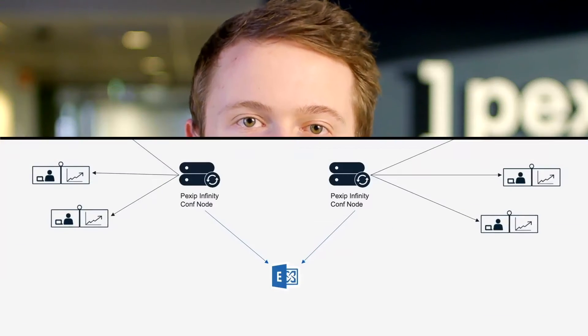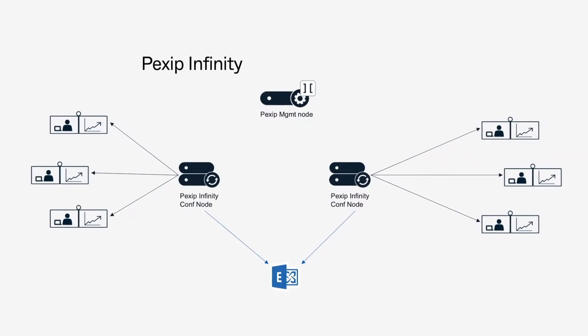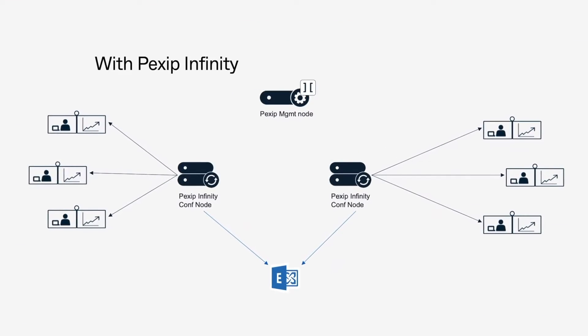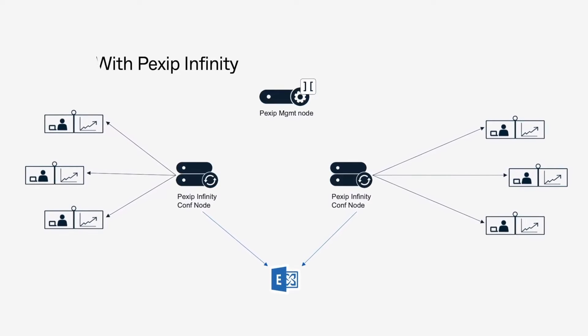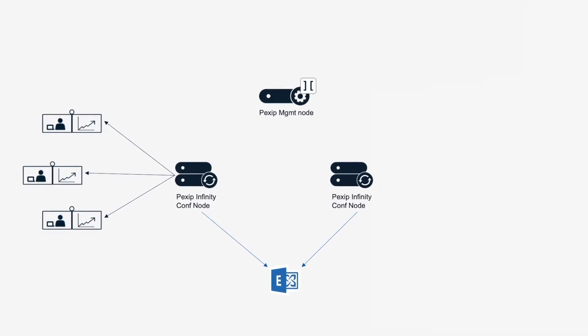OneTouch Join can be used to join any type of meeting. If you have a self-hosted Pexip deployment, OneTouch Join will use the existing conferencing nodes. These conferencing nodes communicate with Microsoft Exchange and Google Calendar to get the meeting details and send them to the correct endpoint.